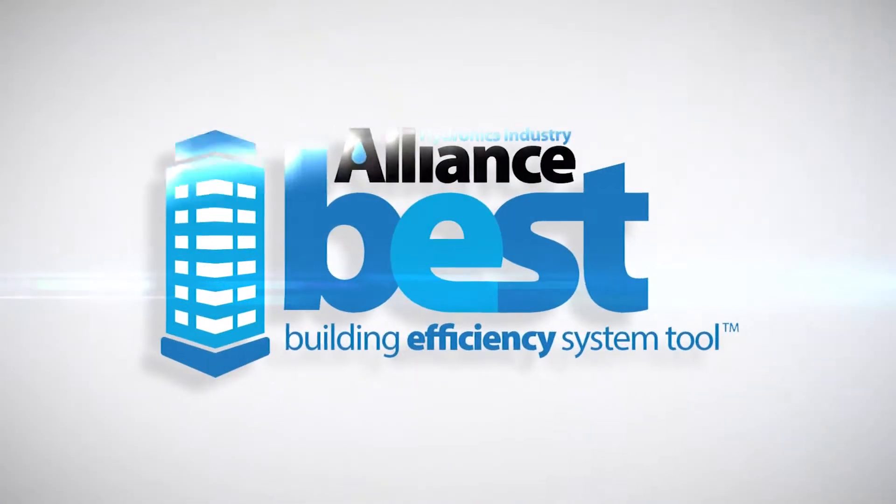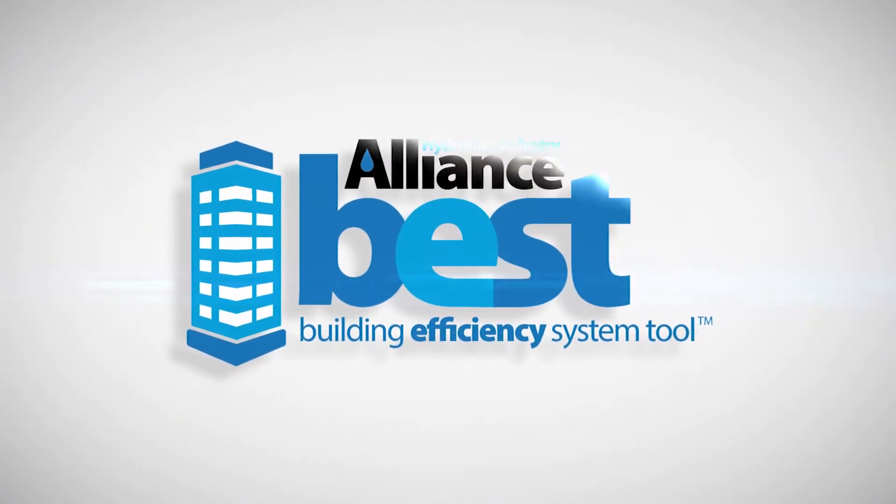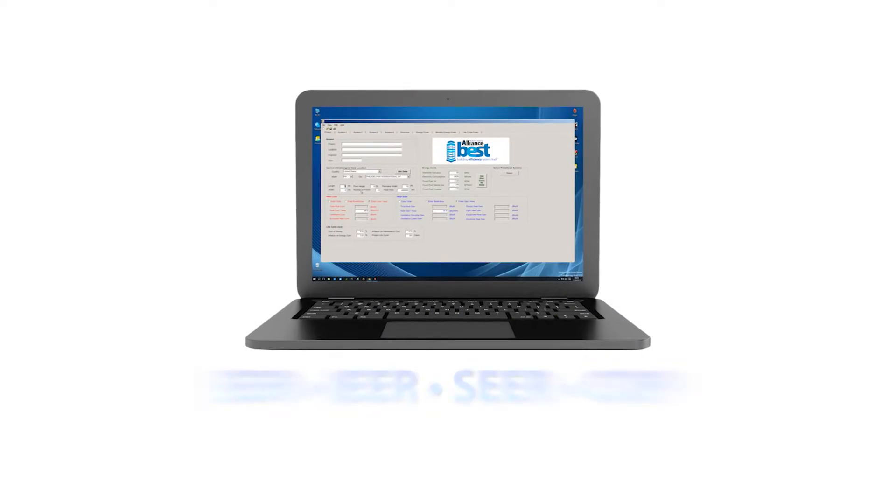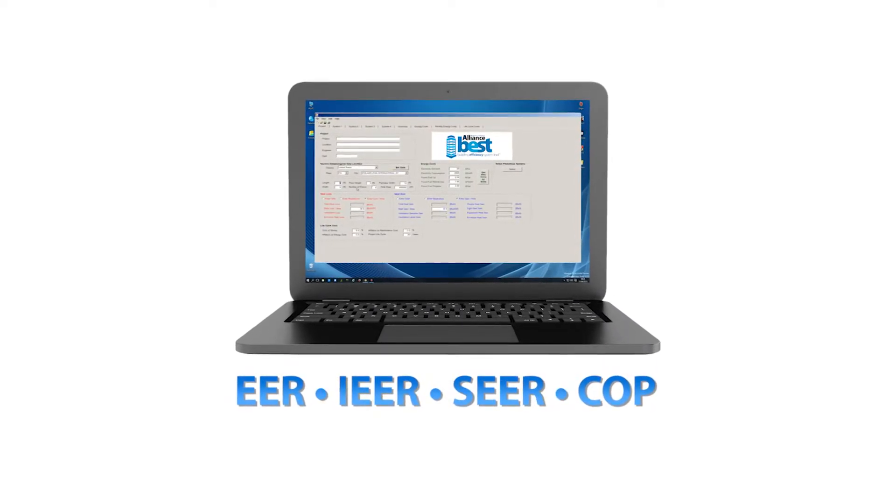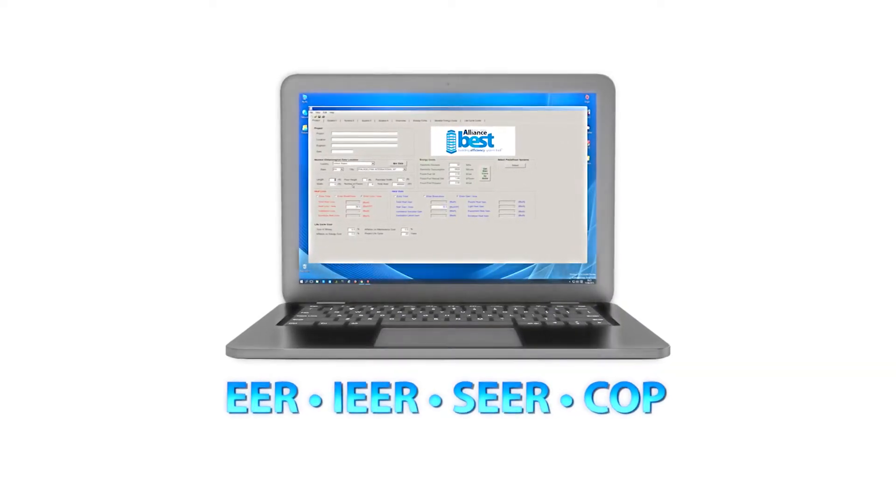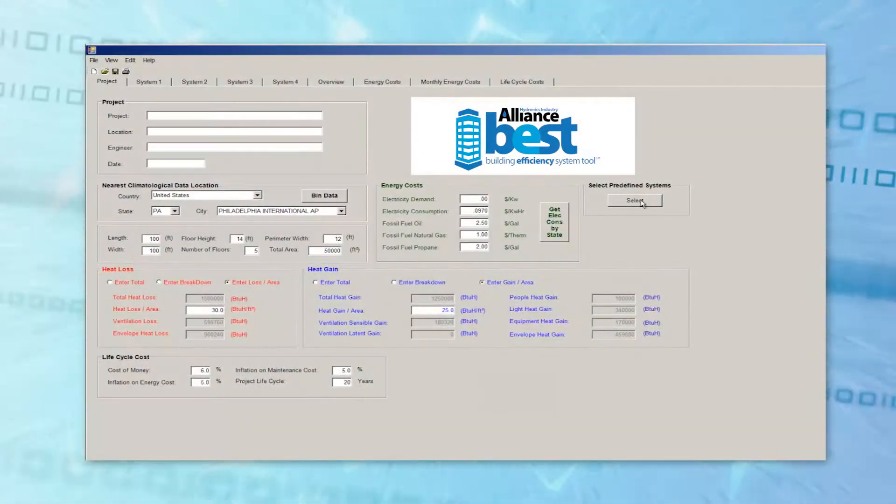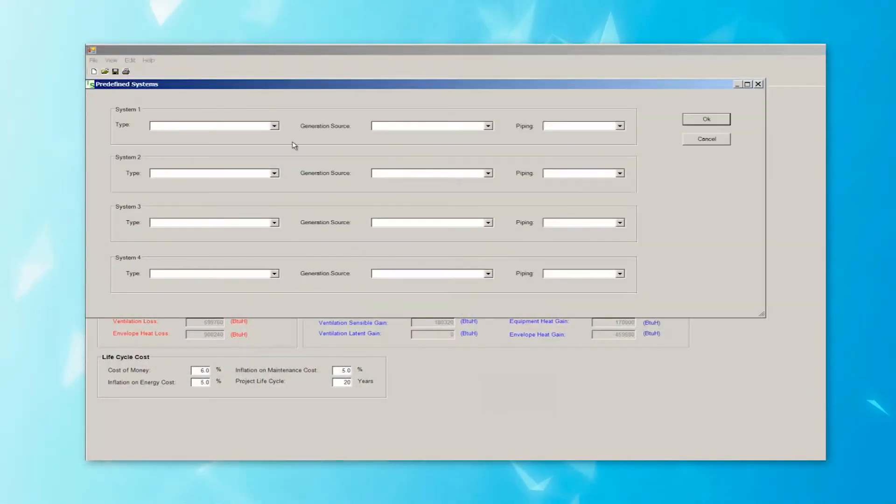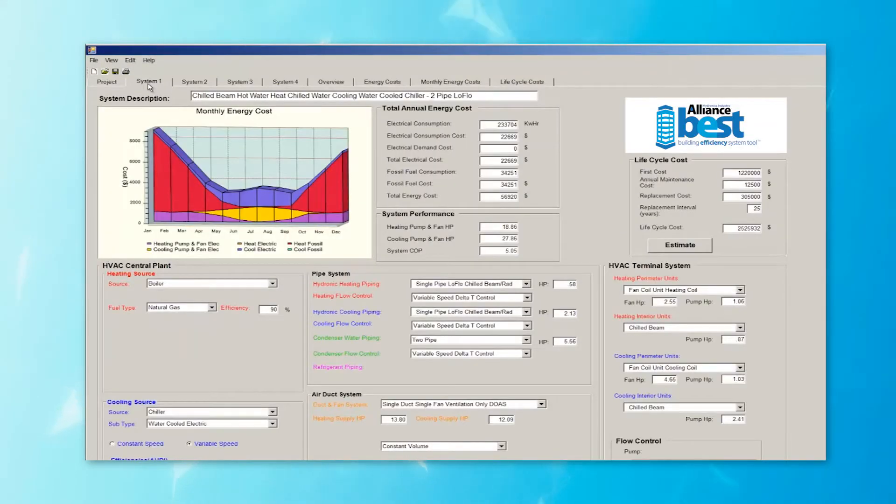Meet the Building Efficiency System Tool. BEST brings together EER, IEER, SEER, and COP data to compare the performance, life cycles, and costs for any type of HVAC system, apples to apples, even in the early design phases.